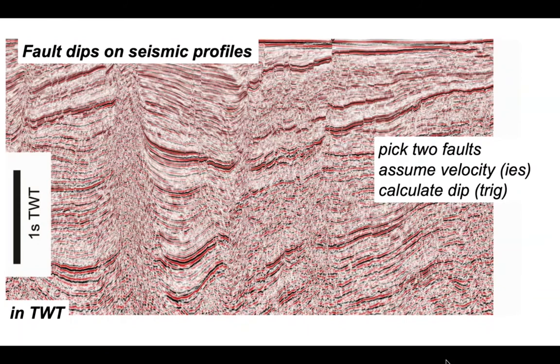So we're going to pick two faults on here and then having done the interpretation in two-way time, we're going to assume seismic velocities and use some simple trigonometry to calculate dips of the faults that we see in the profile - in other words, the apparent dip of the fault planes.